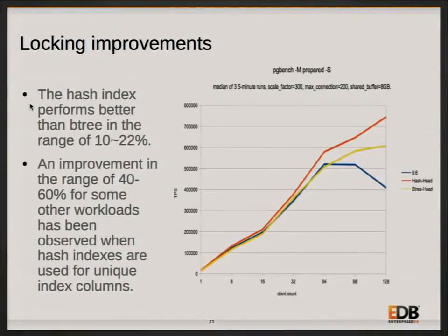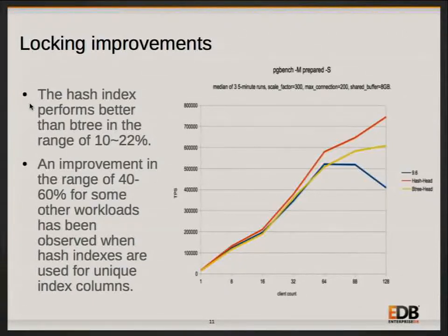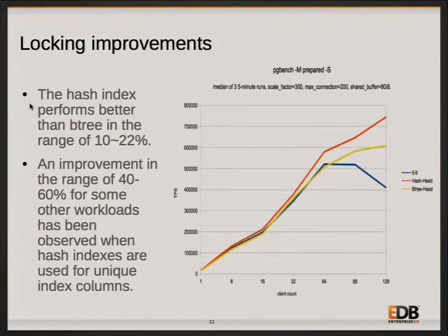Then we tried to compare hash index performance with B-tree index. We can see that B-tree index is much better than hash index in 9.6, whereas the hash index of PostgreSQL 10 performs even better than B-tree. For this PG-bench workload, hash index performs around 10 to 22% better than B-tree index. In addition, some other tests were done for hash indexes where the data is unique, and we have seen around 40 to 60% performance improvement for some workloads. This has been reported by Jasper, who is sitting here, that in some workloads it improved performance to a very good degree compared to B-tree.